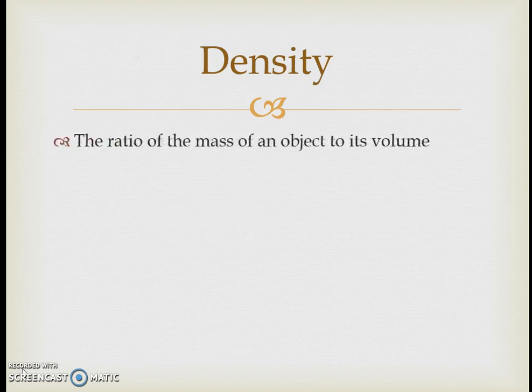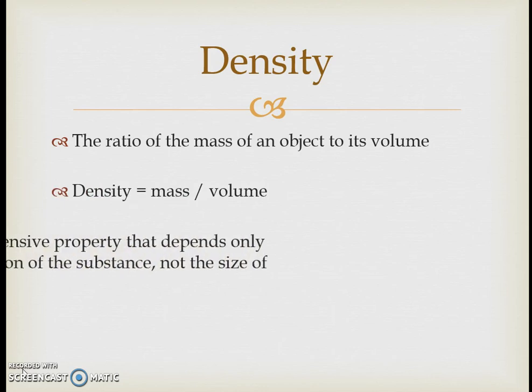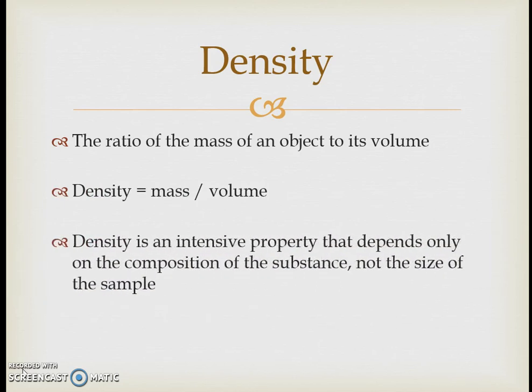From the units — grams per centimeter cubed — we see that density is the ratio of an object's mass to its volume, expressed simply as d equals m over v. Density is an intensive property because it relates to the makeup of the material: as volume gets larger, mass increases at the same rate, keeping density constant.